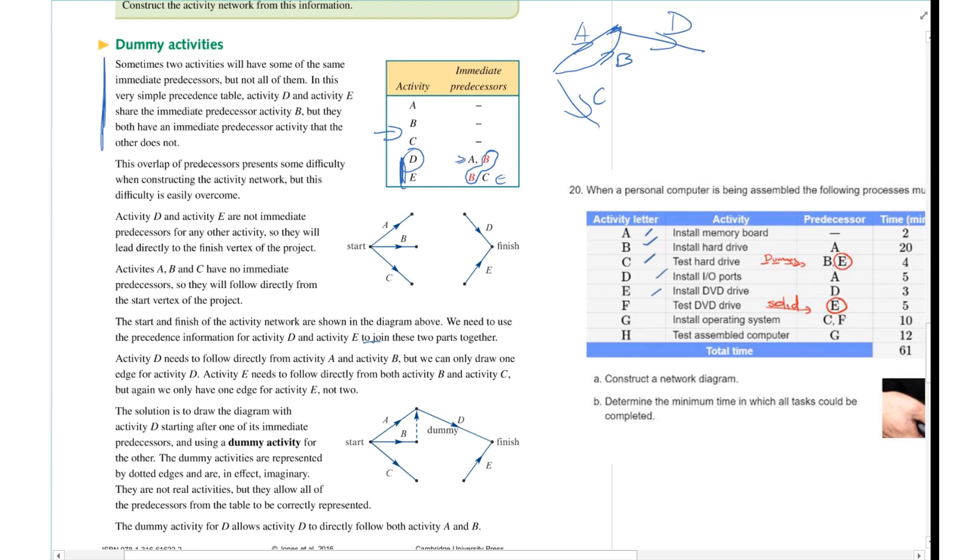So because we know D is going to come off there. Now the reason you need a dummy activity is that I've got A and B coming up here because D comes off it, but E comes off C but it also needs to come off B. So the question is how can I connect B so it connects to D and also finish at the same time as C so E can move forward? You can't do it in this format.